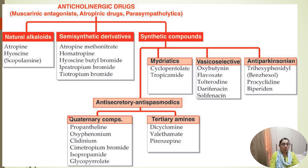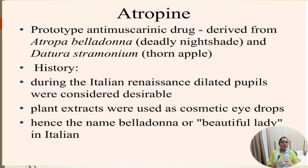Anti-secretory or antispasmodic drugs fall into two groups: quaternary compounds and tertiary compounds. Quaternary compounds include propantheline, oxyphenonium, clidinium, isopropamide, and glycopyrrolate. Tertiary compounds or tertiary amines include dicyclomine, valethamate, and pirenzepine — all used as anti-secretory or antispasmodic drugs.